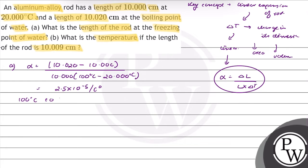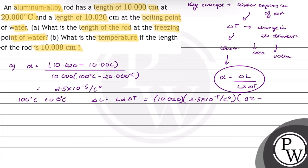From 100 degree Celsius to 0 degree Celsius, we calculate Delta L. Delta L is equal to L into alpha into Delta T. The initial length L is 10.020 cm, the coefficient of linear expansion is 2.5 into 10 raised to power minus 5 per degree Celsius, and the change in temperature is 0 degree Celsius minus 100 degree Celsius. This gives Delta L equal to minus 0.02505 centimeter.